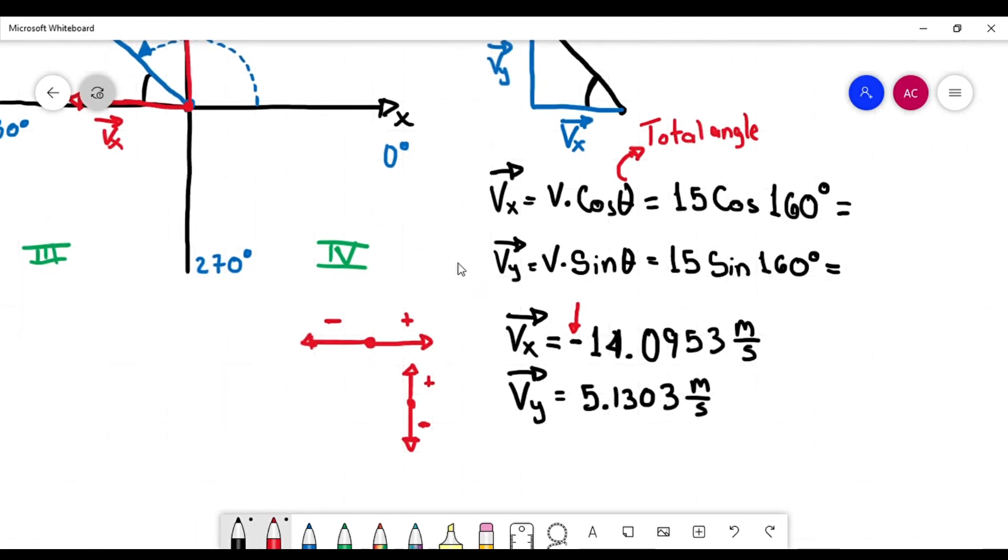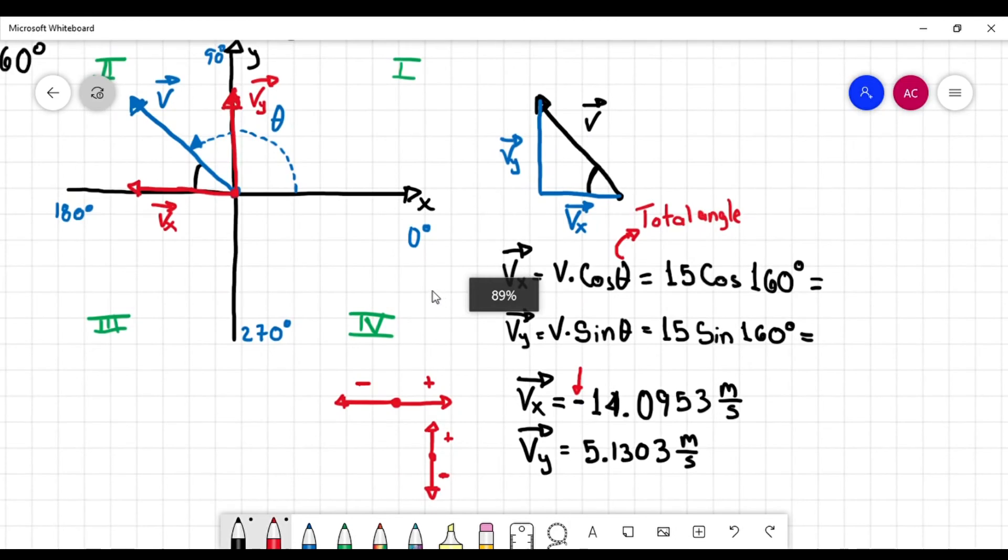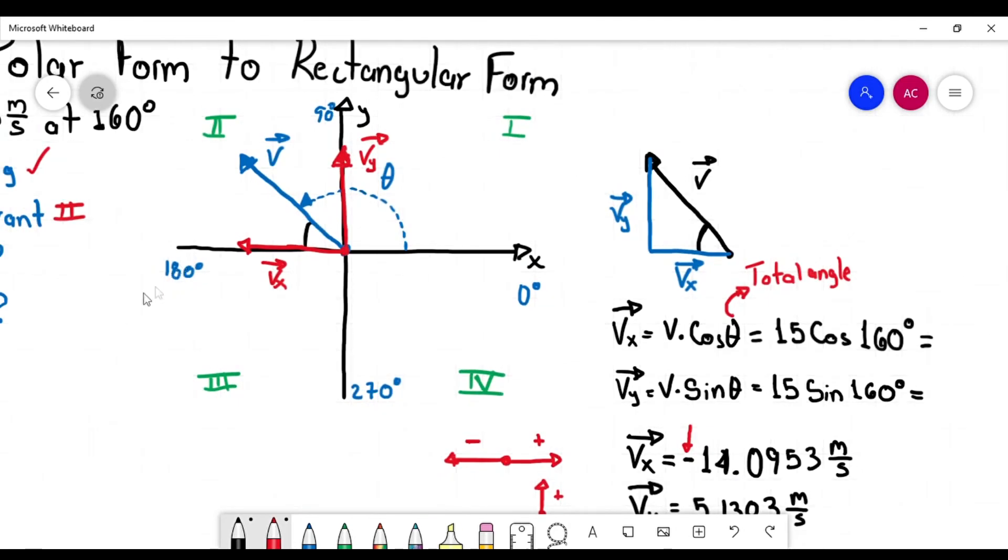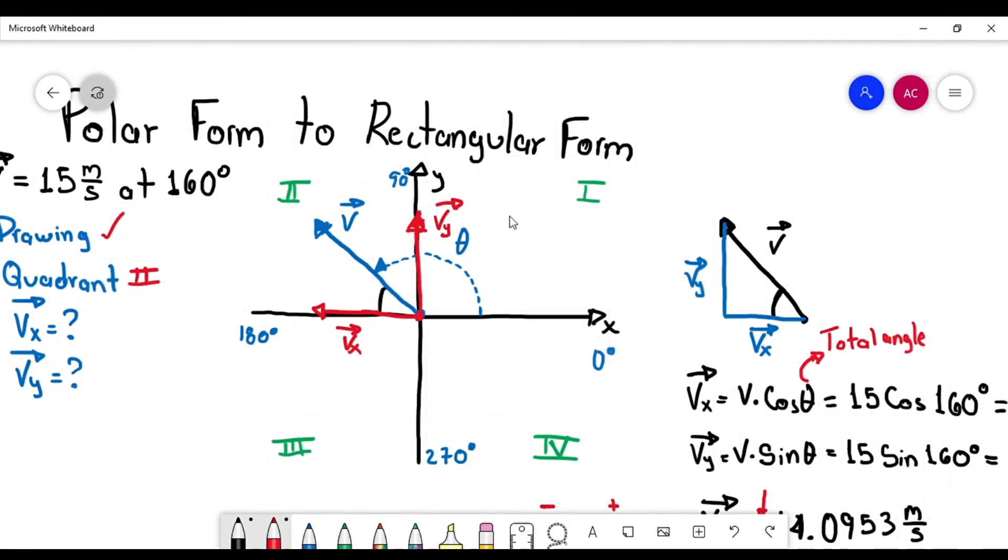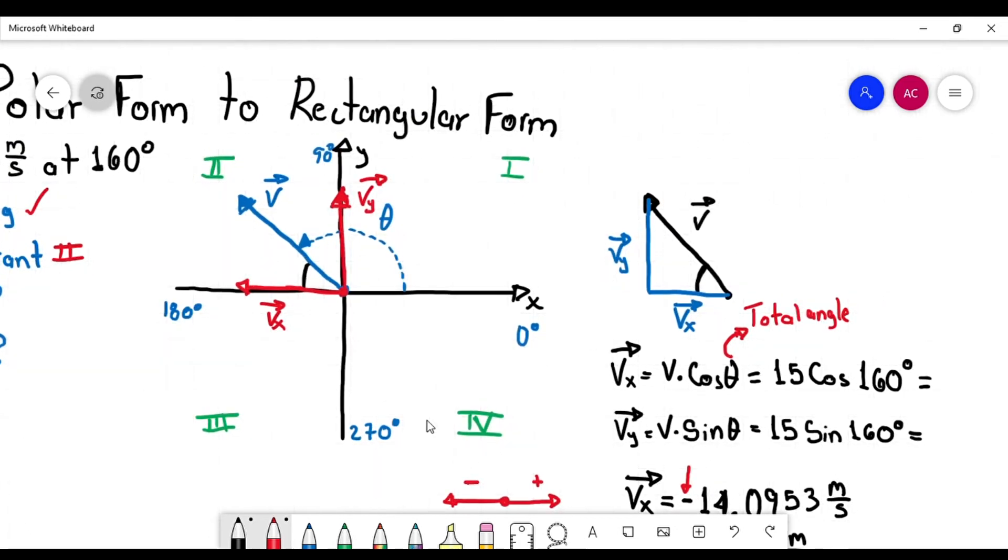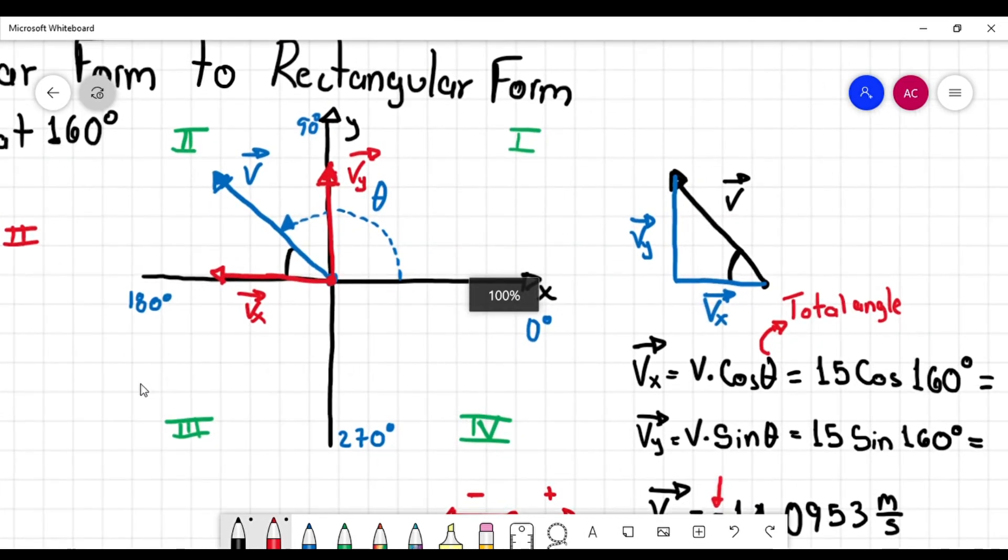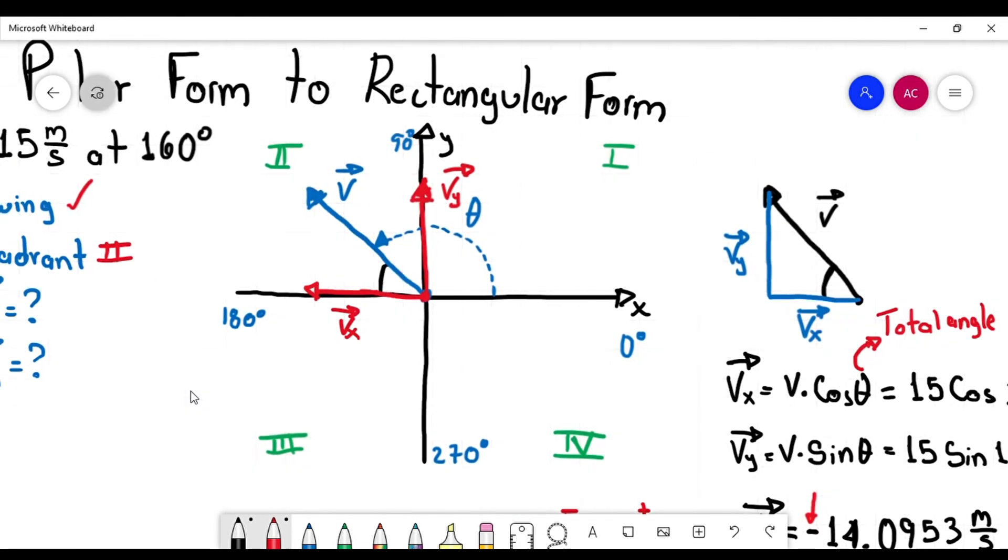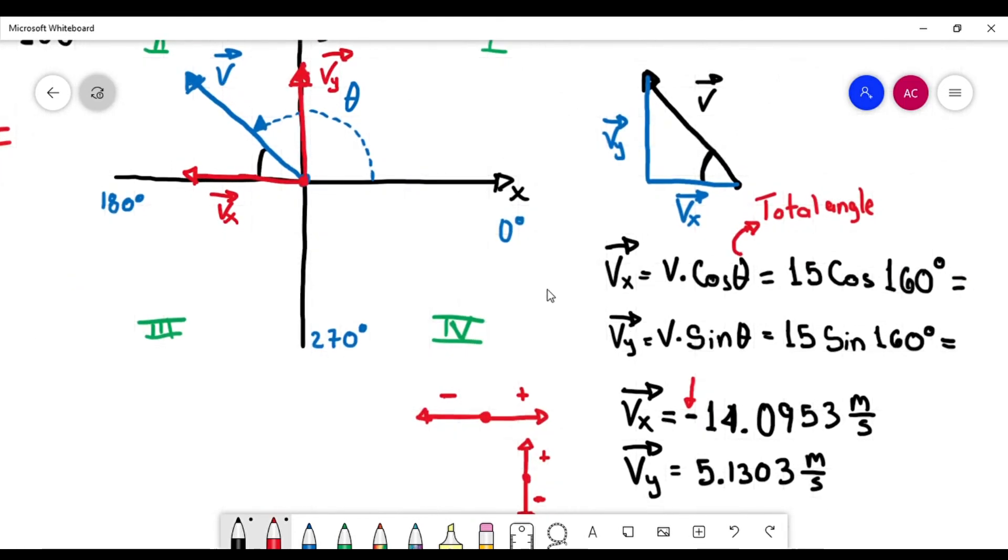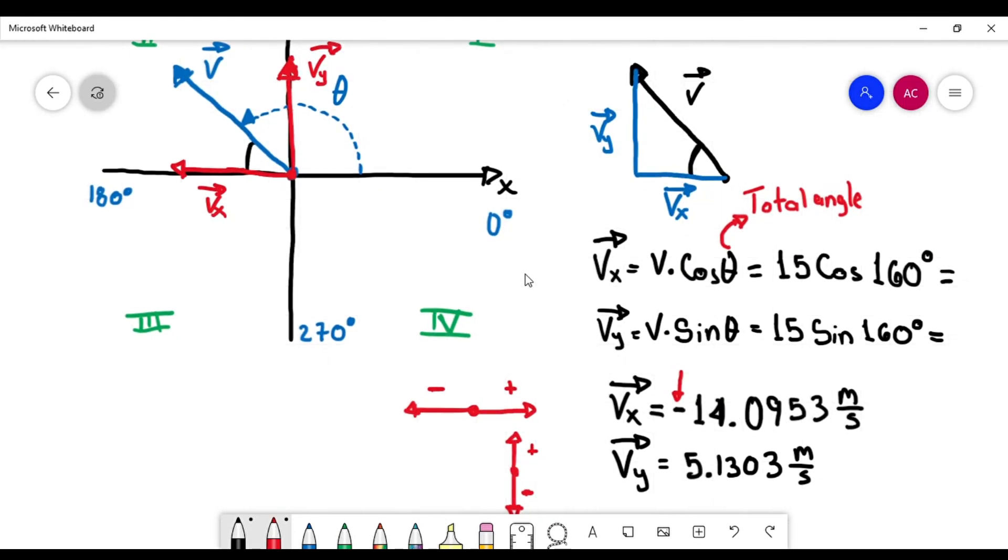Okay. So this was the first example, the first problem, when we transform polar form into rectangular form. In the next video, we're going to see the opposite: rectangular form to polar form. Okay. Well, see you in the next video, guys. Bye-bye.